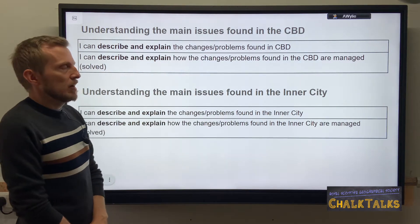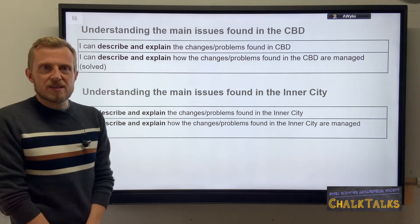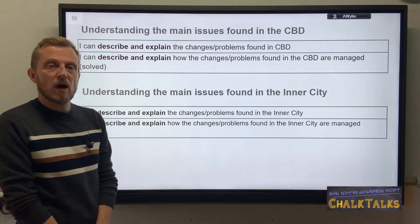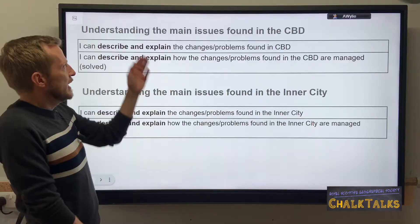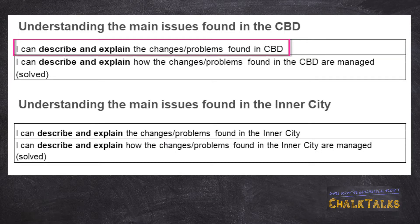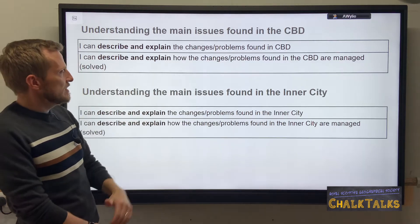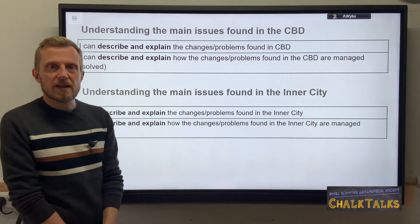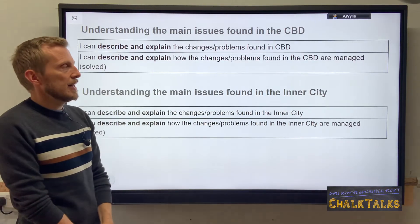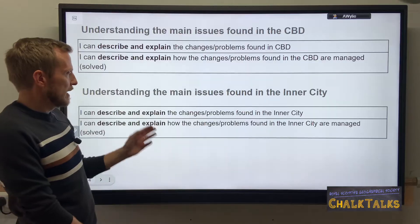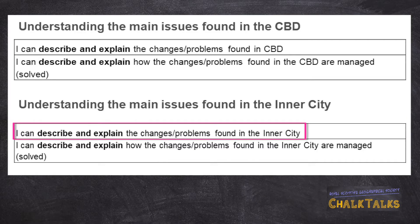In this next group of learning outcomes you'll see a familiar pattern to the types of questions you're most likely to encounter. In this first grouping you have to be able to explain the changes or the problems likely to be found in the central business district, and also describe and explain how those problems are being managed or solved. For the inner city you must do a very similar thing — describe and explain the changes and problems found there, as well as how those problems are managed or solved.